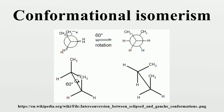The energy difference between gauche and anti is 0.9 kcal/mol, associated with the strain energy of the gauche conformer. The anti-conformer is therefore the most stable. The three eclipsed conformations with dihedral angles of 0 degrees, 120 degrees, and 240 degrees are not considered to be rotamers, but are instead transition states of higher energy. Note that the two eclipsed conformations have different energies: at 0 degrees the two methyl groups are eclipsed, resulting in higher energy than at 120 degrees, where the methyl groups are eclipsed with hydrogens.